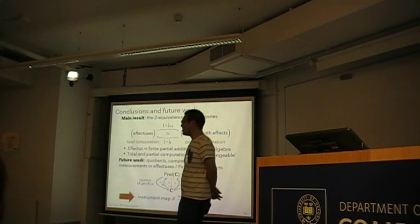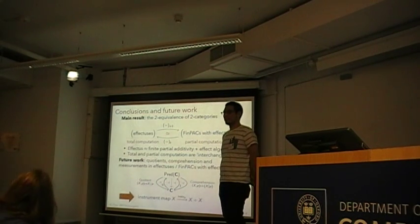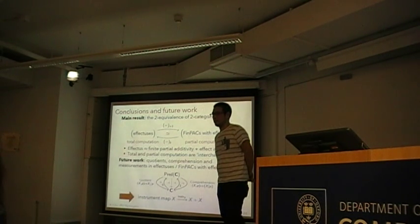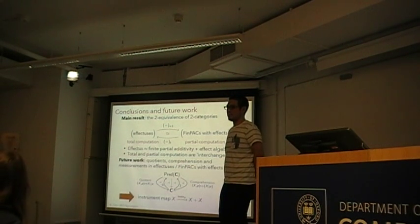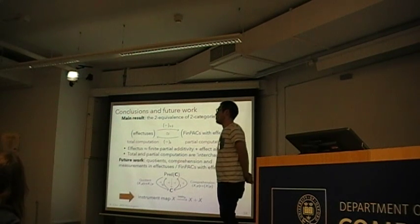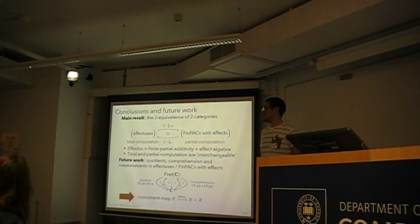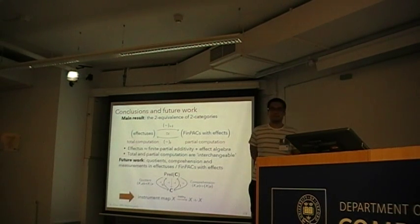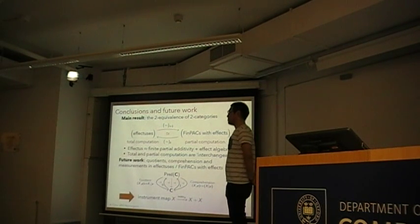Regarding sequential effect algebras: the predicates form an effect algebra, but if you have these instrument maps — measurement maps — then you get a product, and that will give rise to a sequential effect algebra structure. It's not a full sequential effect algebra, so it doesn't obey all the rules. We want one that obeys all the rules — we have half of them. An additional axiom or strength condition will force that.